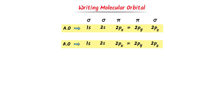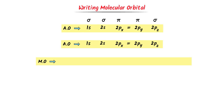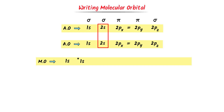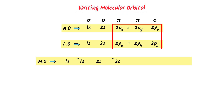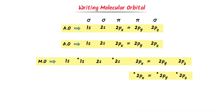These atomic orbitals will combine together to form molecular orbitals. The two 1s atomic orbitals combine to form two molecular orbitals — a bonding 1s and an anti-bonding 1s (with a star). Similarly, the 2s atomic orbitals combine to form bonding 2s and anti-bonding 2s* molecular orbitals. The 2p atomic orbitals combine to form molecular orbitals: bonding 2px = 2py and 2pz, and anti-bonding 2px* = 2py* and 2pz*, with stars indicating higher energy.